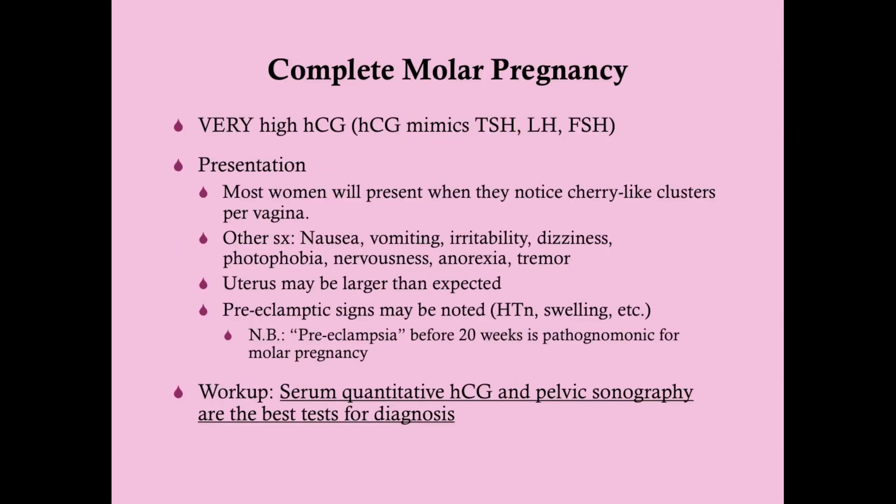Pregnancy is associated with a very high HCG because it is comprised of syncytiotrophoblasts. HCG mimics TSH, LH, and FSH because it shares a subunit with those hormones. So when you have a very high HCG, it's as if you have a high TSH, a high LH, and a high FSH, and that contributes to some of the symptoms we see in complete molar pregnancy.